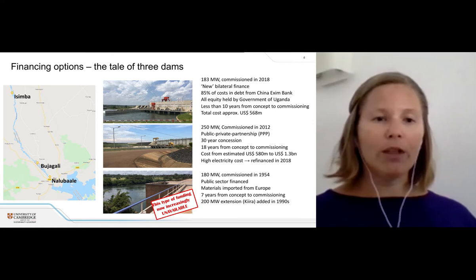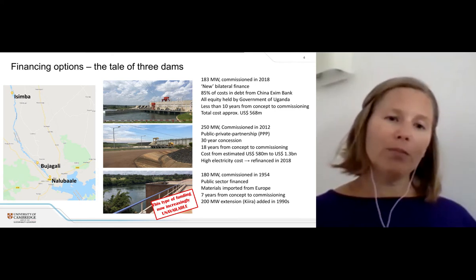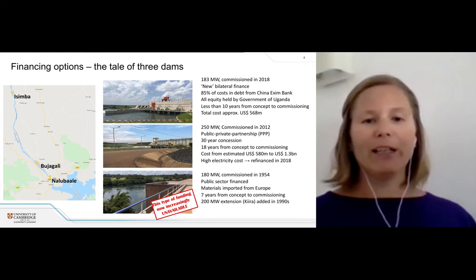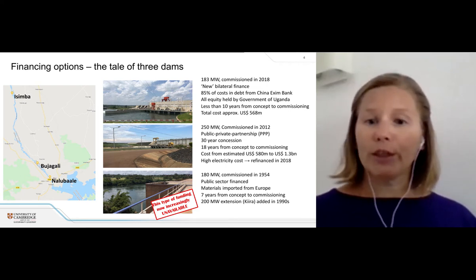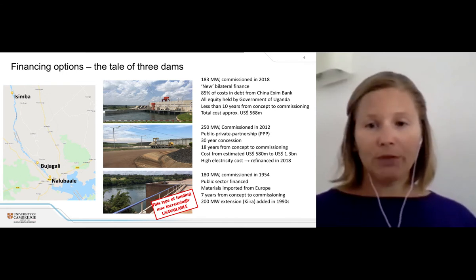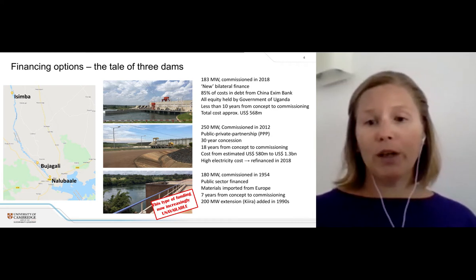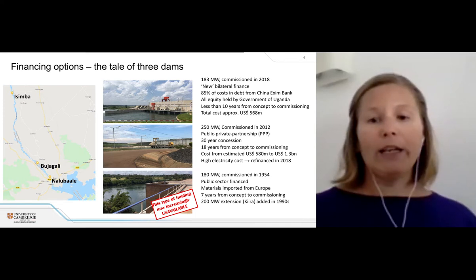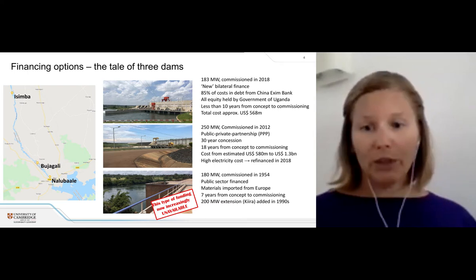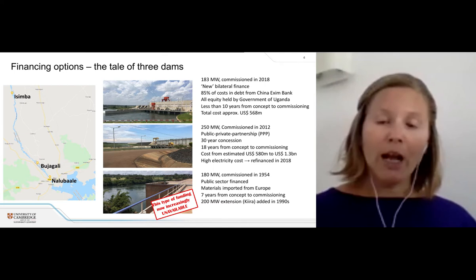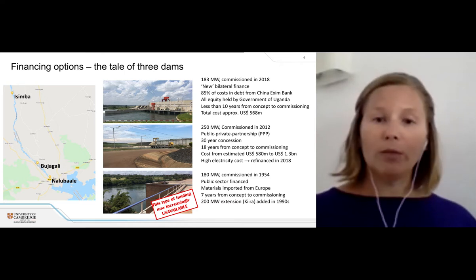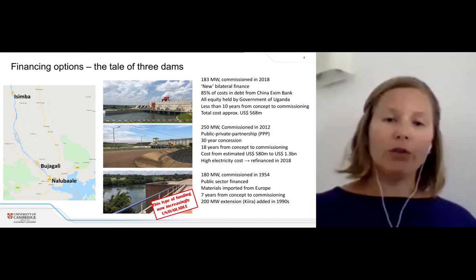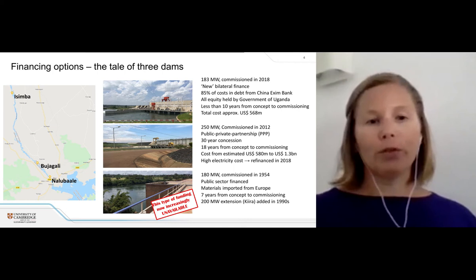The first dam is Nalubaale — a 180-megawatt dam commissioned in 1954, fully public-sector financed. The initial construction in the 1950s was financed under colonial times, with most materials imported from Europe. The dam took seven years from concept to commission, including a three-year construction period. It was later extended by a 200-megawatt addition called Kiira, located about one kilometer away on the same point of the White Nile.